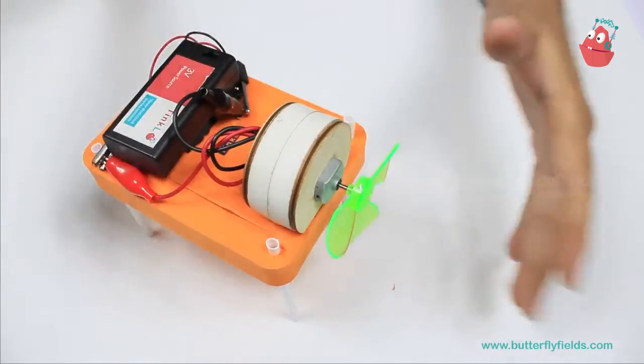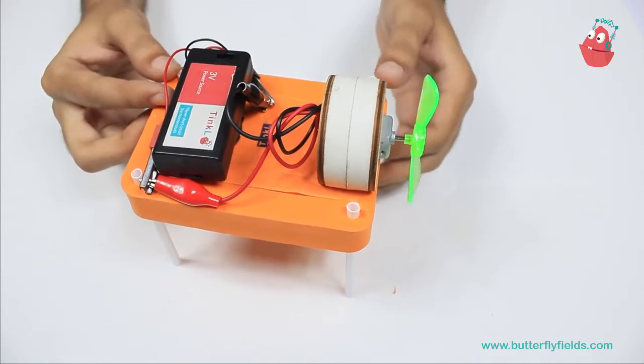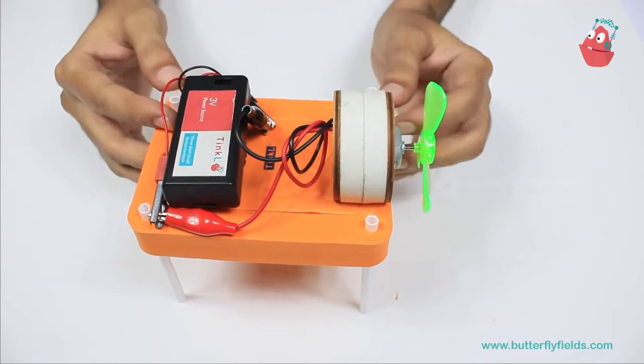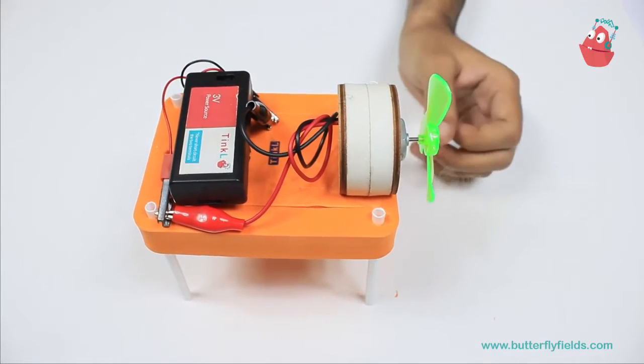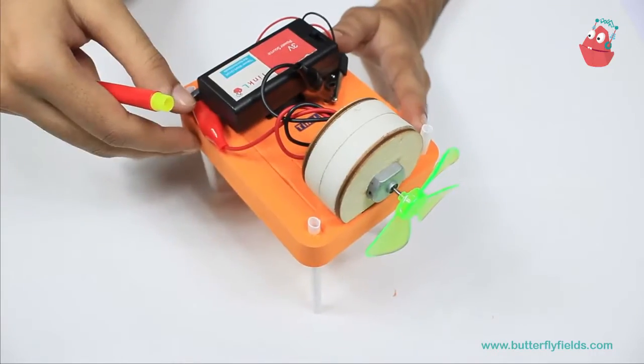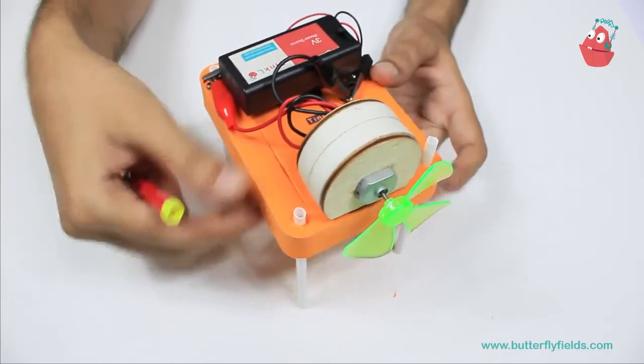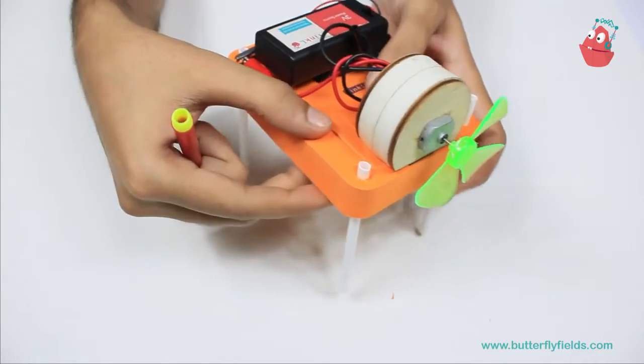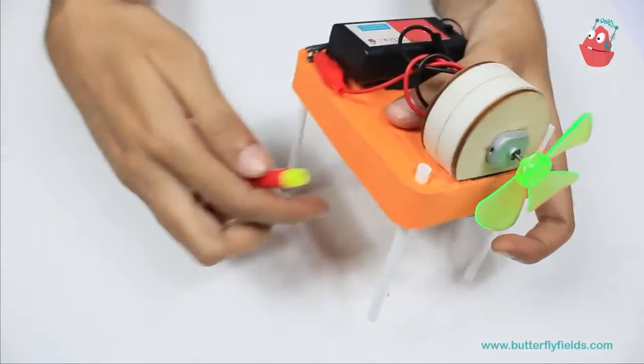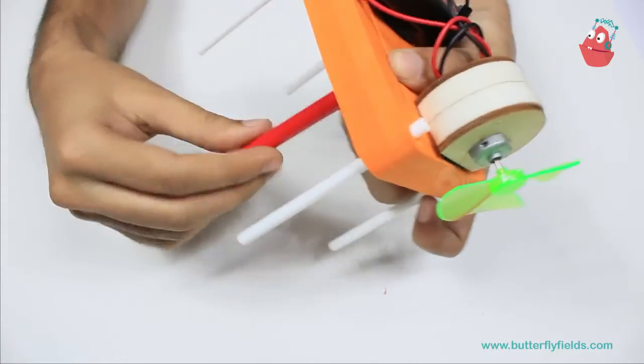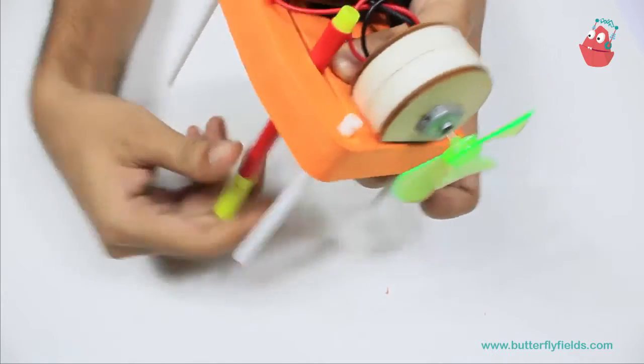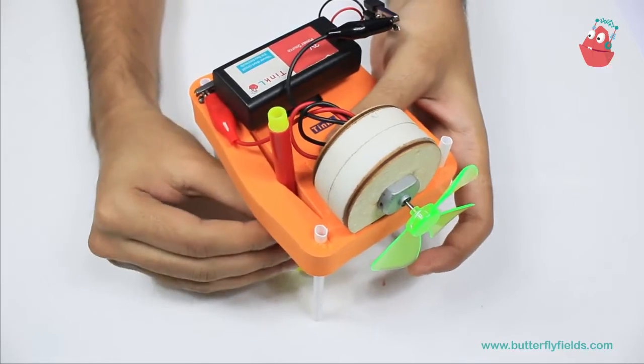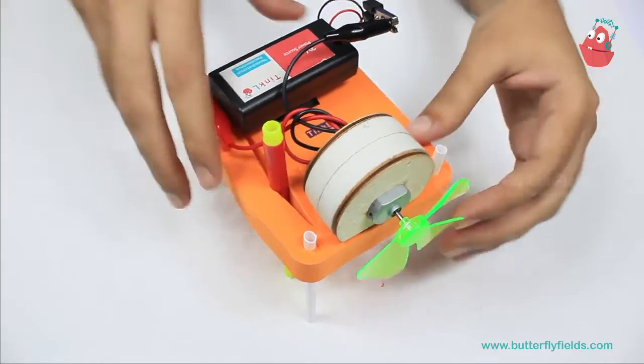So once you have attached the motor and the battery, we are ready to draw, but first we need to attach the sketch pens to it. Either you can replace one of these straws with the sketch pens, or there are slits provided here you can use them. Just insert them into the slits and make sure that they are also at the same level as that of the legs.